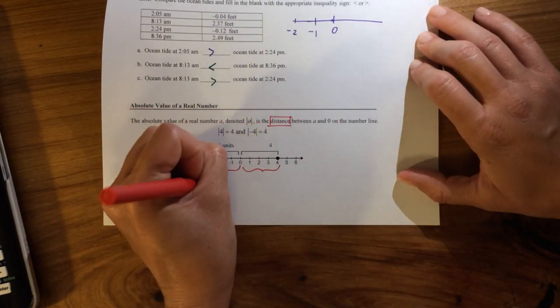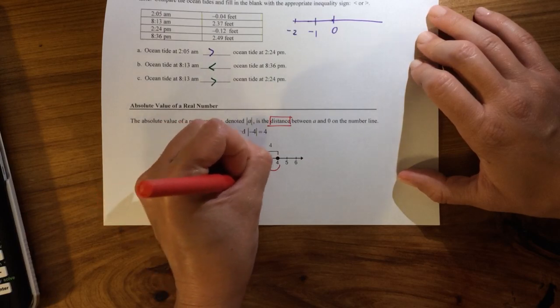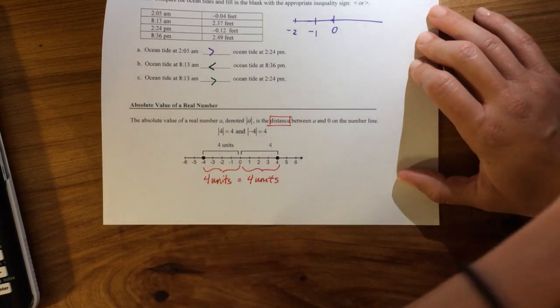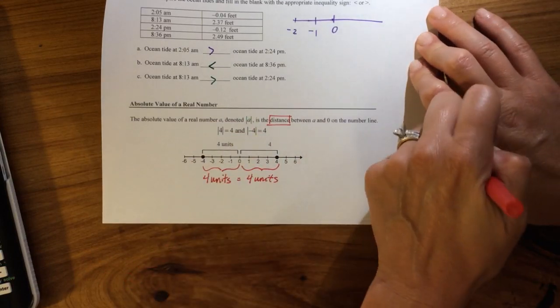So this is 4 units, and this is 4 units. So that's why they're the same, because you're just measuring the distance between them.